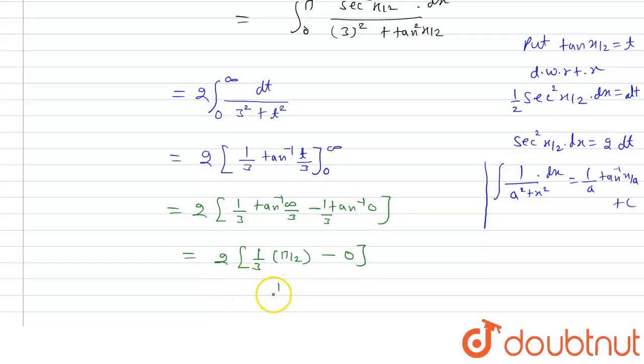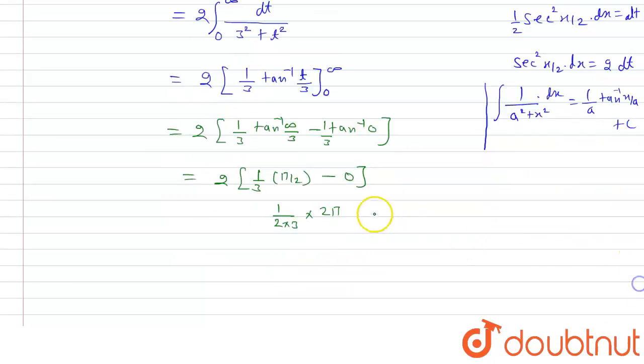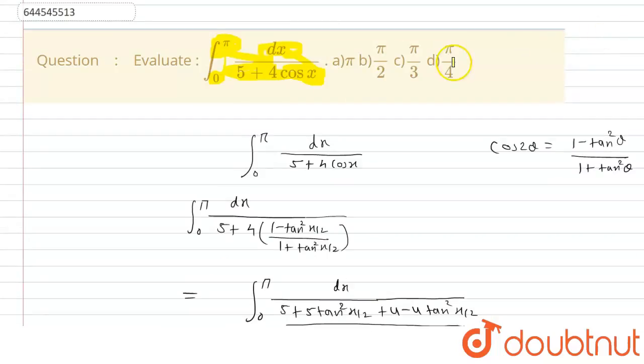So from here we get 1 by 2 multiply by 3 multiply by 2 pi, so that is this 2 and this 2 will cancel out, so this will be pi by 3. The answer of this question is pi by 3, so from here we have option c is the correct option.